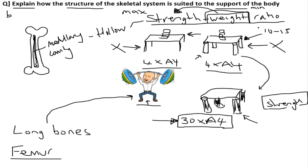We don't want to waste energy carrying heavy bones around. Although solid bones would be super strong, we would need to produce an absolute ton of energy, and that's just not efficient for an organism like ours. We need to produce the maximum strength with the minimum weight, which allows us to move efficiently and effectively. That gives us maximum strength for the minimum amount of bone material - that is why bones are hollow and why it gives us the best strength to support the body.